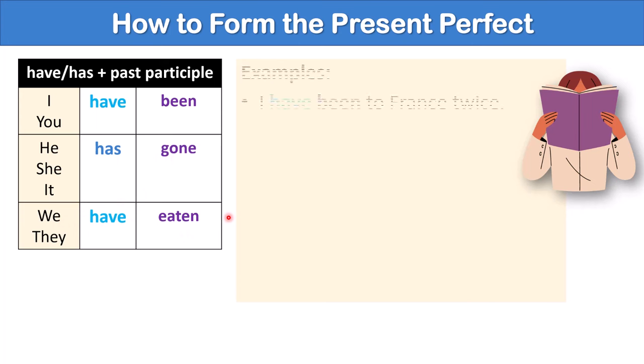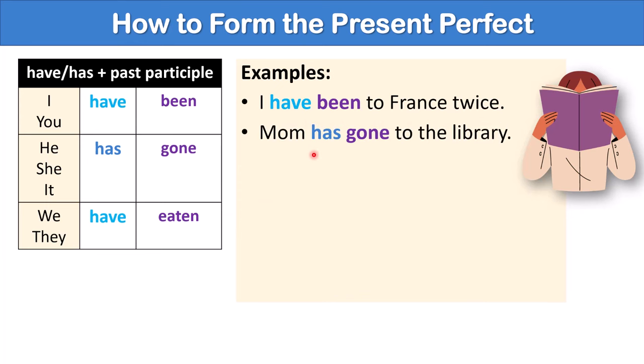Let's look at some sentence examples. I have been to France twice. Mom has gone to the library. We have eaten sushi before.